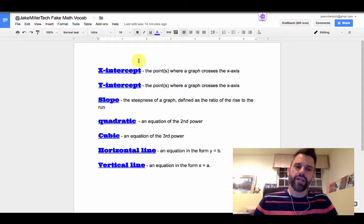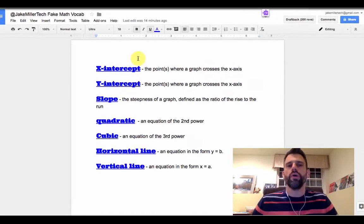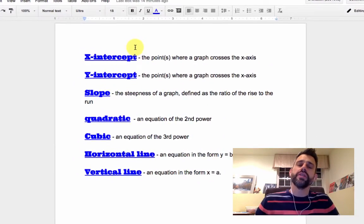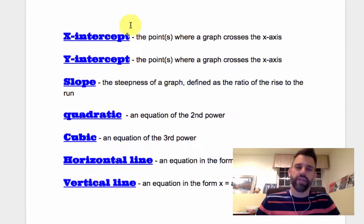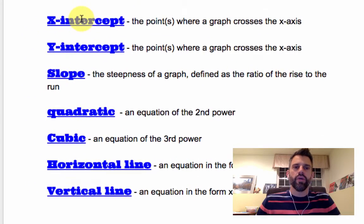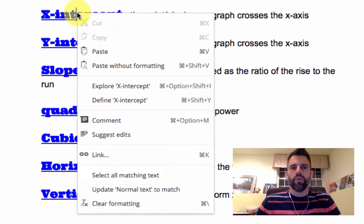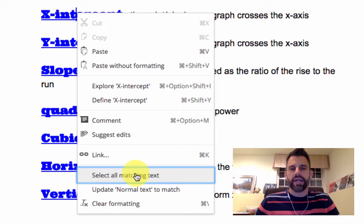Now if I decide I want to change all of those because they do look so bulky and chunky, I could use another different tool in here, which I find really handy in situations like these, which is to right click on one of those things that's that way and click here where it says select all matching text.